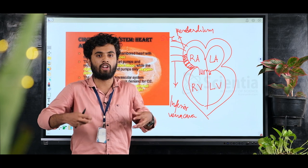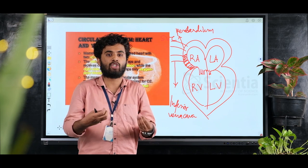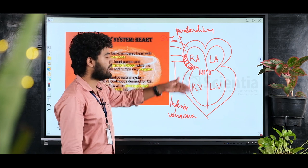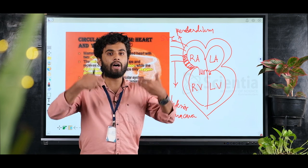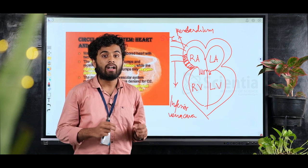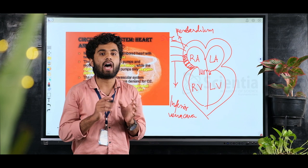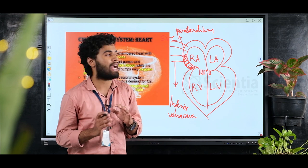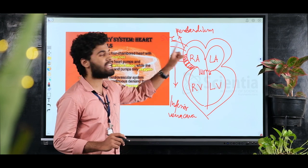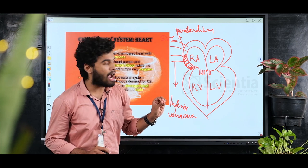Deoxygenated blood — that is, carbon dioxide-rich blood from the upper part of the body — flows via the superior vena cava into the right atrium.